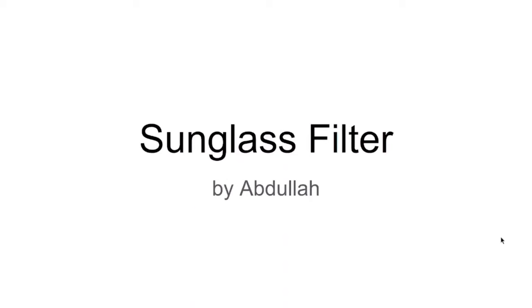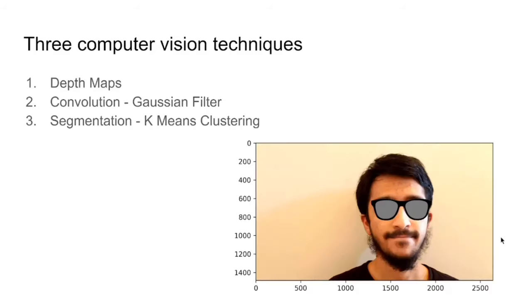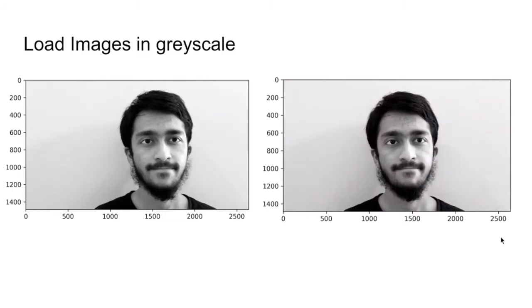I'm going to show you my sunglass filter and how it works. The input image is my face and the output image is my face with a sunglass. We're going to use three main concepts here: depth map, convolution, and segmentation.